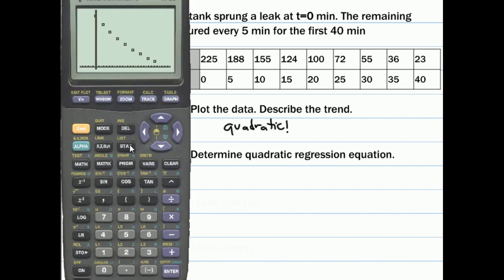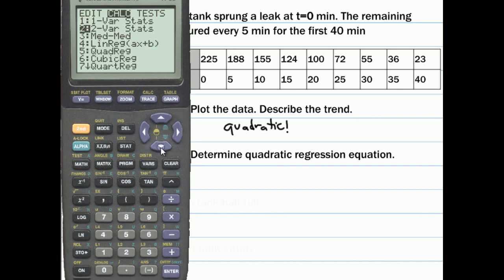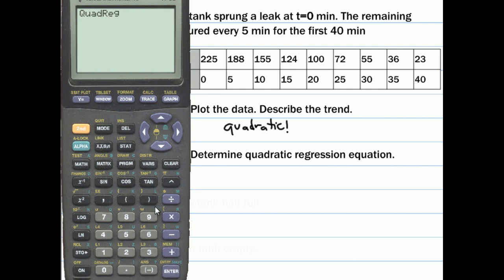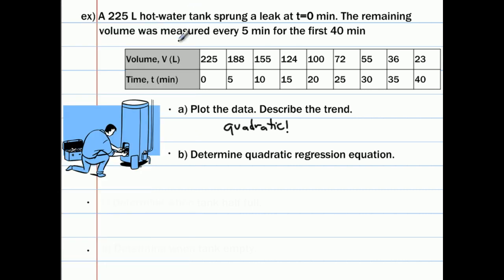The next question asks us to determine the quadratic regression equation. We'll go to stat, calculate, and then scroll down to quadratic regression. Select that, and we'll put whatever that function comes out into Y1. There we go. So here's our function, and it's placed it into Y1 for us. Our regression equation is volume equals 0.065 T squared minus 7.651 T plus 224.85.